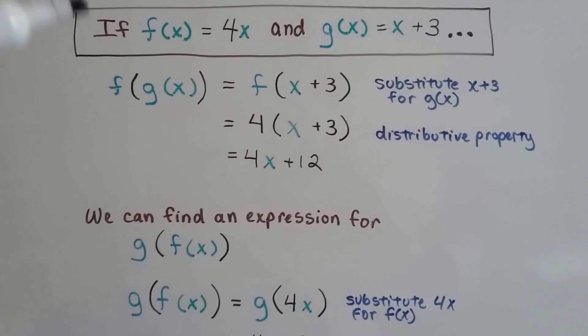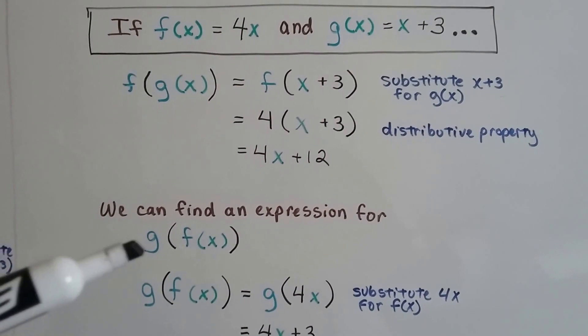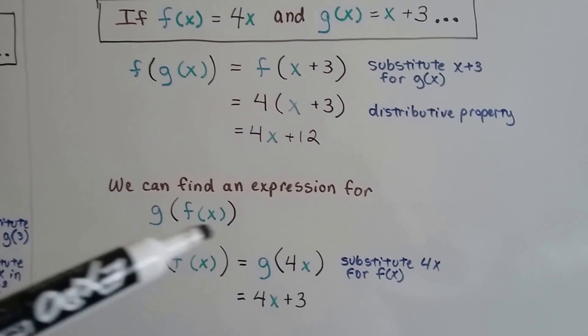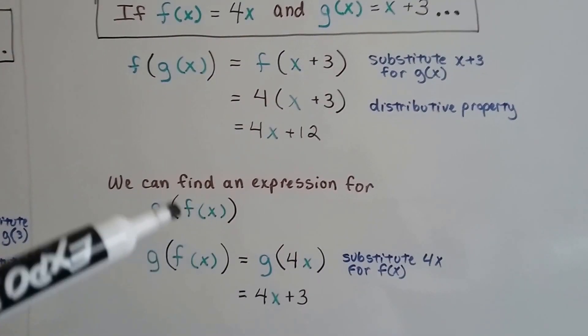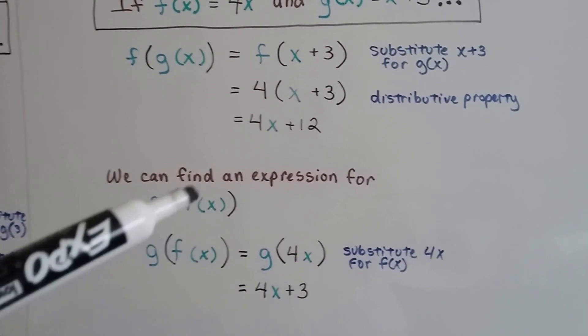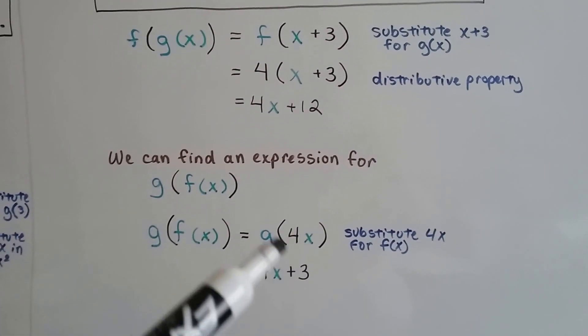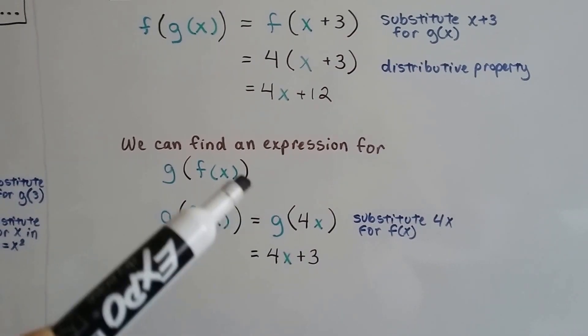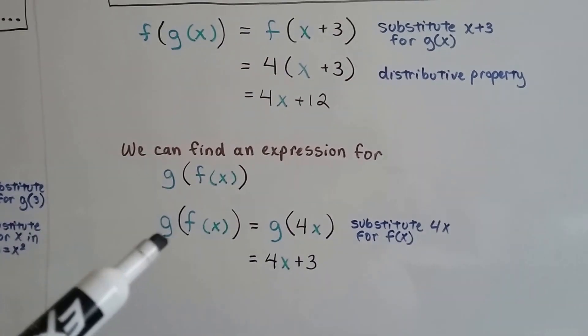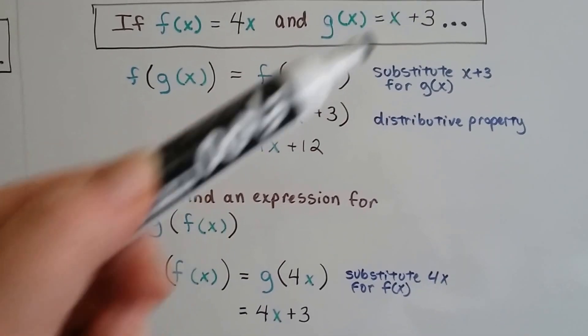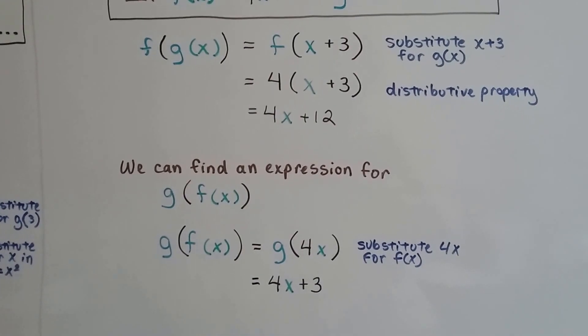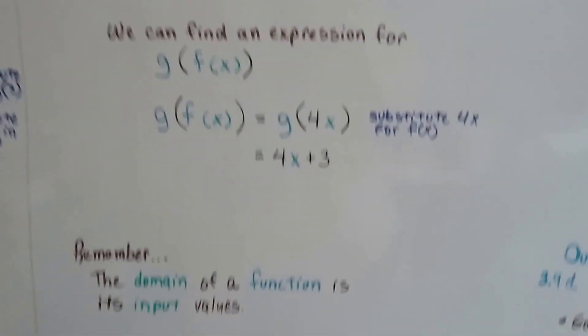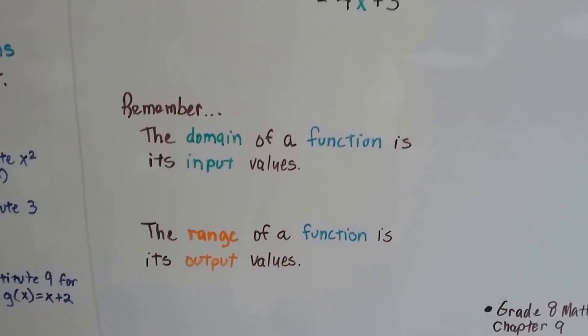We can take this information and find an expression for g of f of x. So now we've got the f of x inside of here. So that means we're going to have 4x inside of here. So it's going to be g with the 4x inside the parentheses. We substitute that 4x for the f of x. And we know that g is x plus 3, so that means we have 4x plus 3. See how we did that?